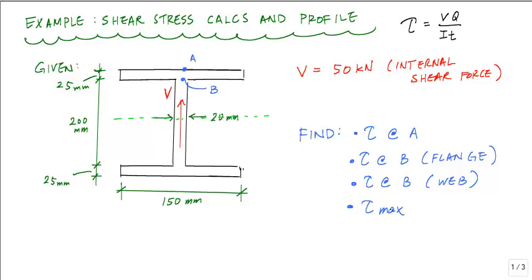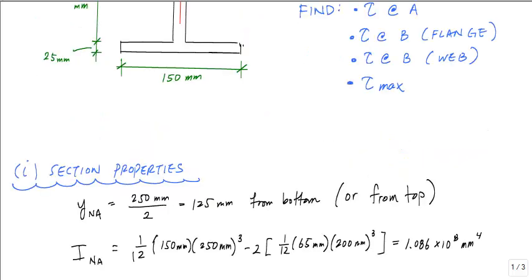The maximum shear stress occurs at the neutral axis location. This is the shear stress formula. One of the first things you want to do, once you have the internal shear force, is calculate some of the section properties for the beam. The neutral axis is 125 millimeters from the bottom, which is simple to calculate because the whole cross section is symmetric about two planes. The moment of inertia about the neutral axis is calculated by taking one large rectangle and subtracting out the holes, giving 1.086 times 10 to the 8 millimeters to the 4th.